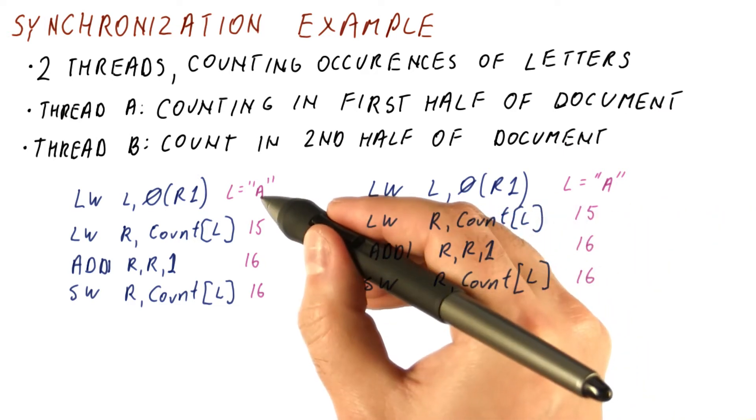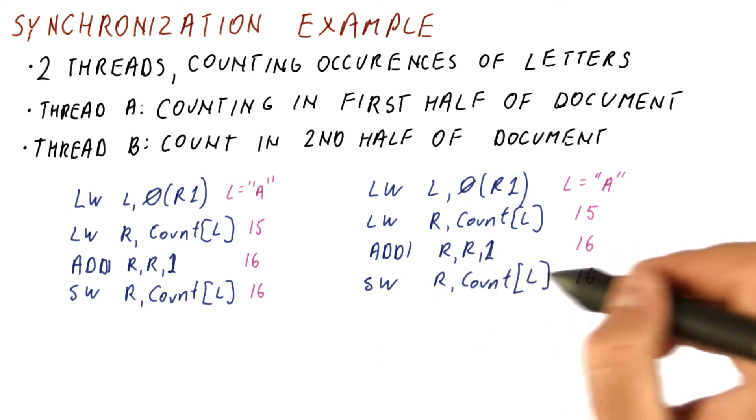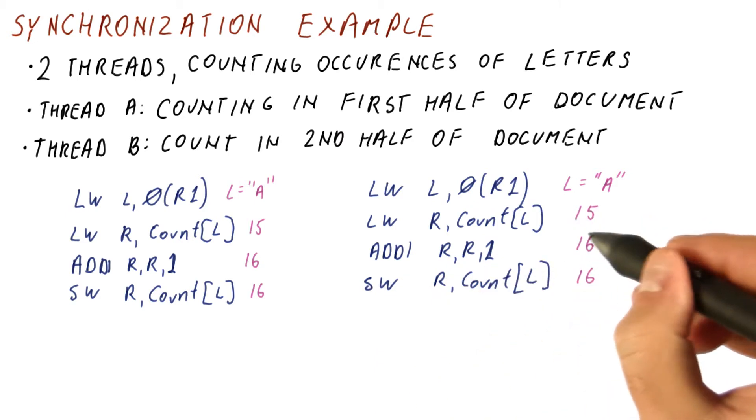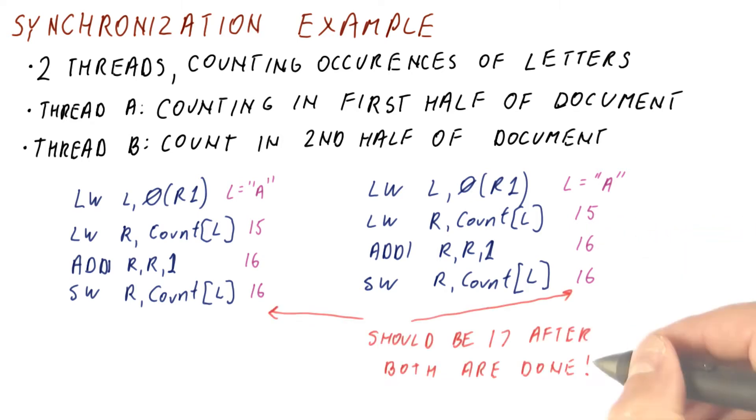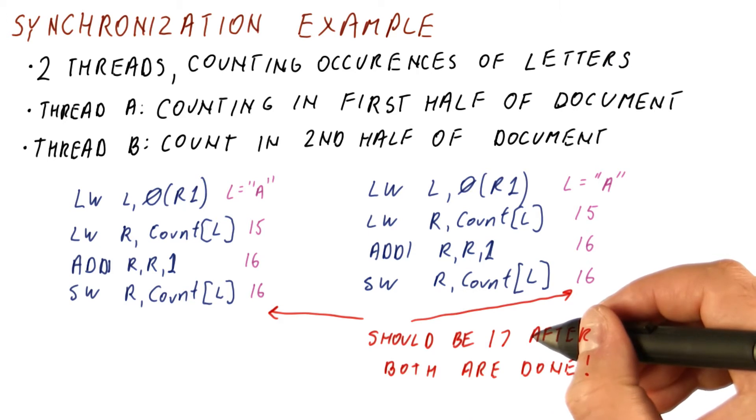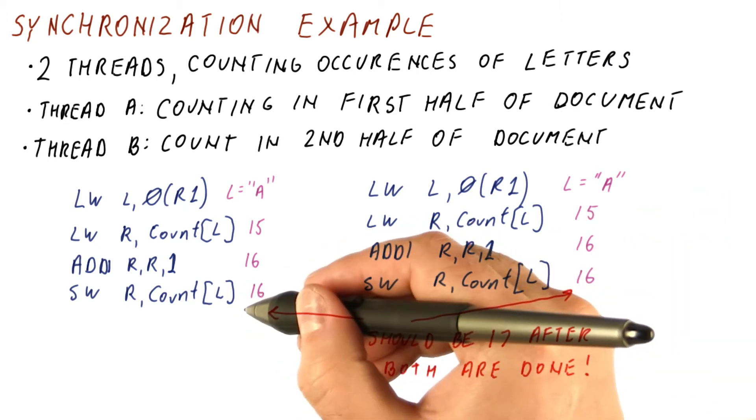So now, there were two occurrences of letter A, but the value in the array ends up being 16, which is only one more than the original 15. So after both of these threads are done updating the counter, the counter should have been 17, so clearly this is incorrect behavior.